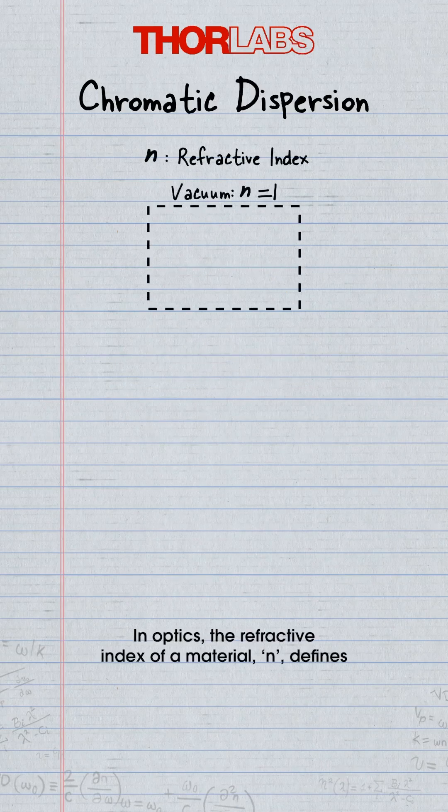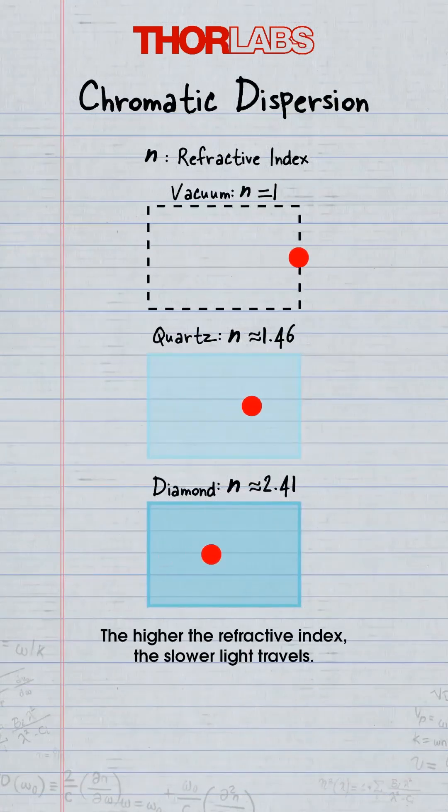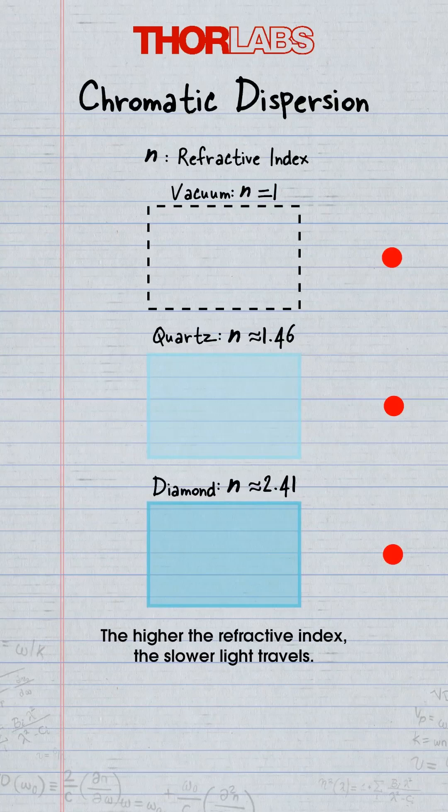In optics, the refractive index of a material defines how much slower light travels in the material than in a vacuum. The higher the refractive index, the slower light travels.